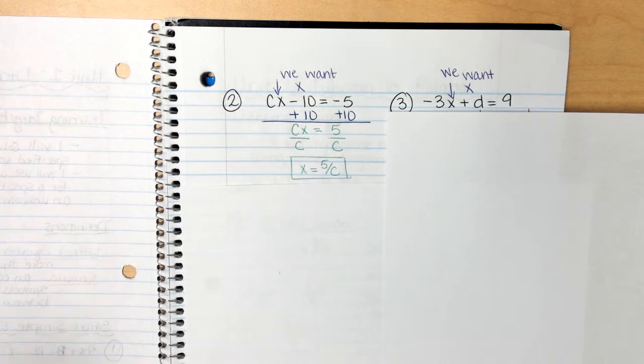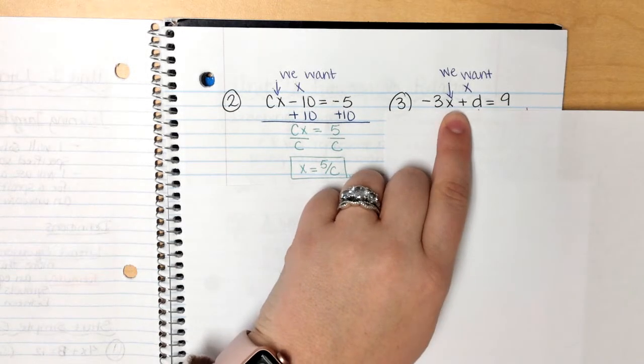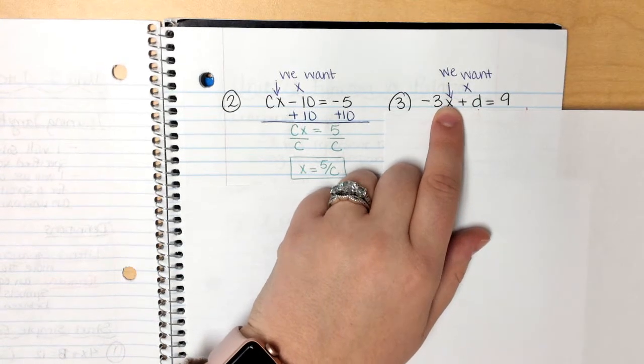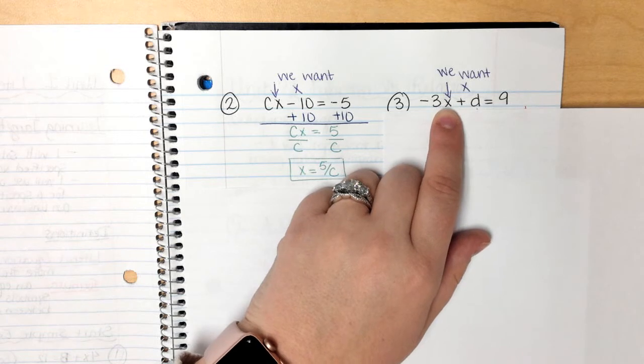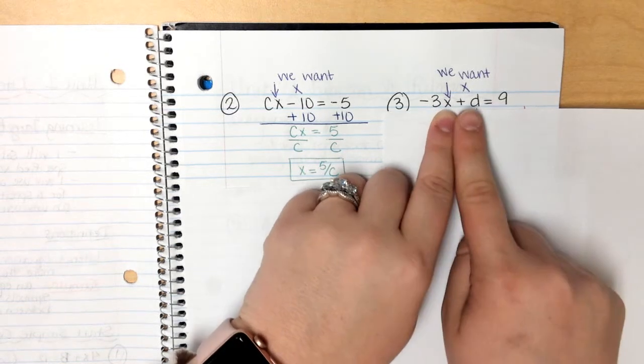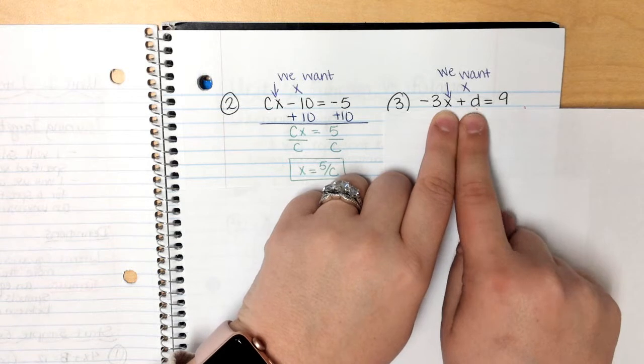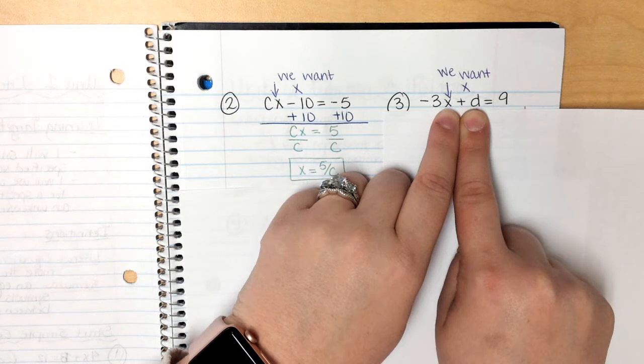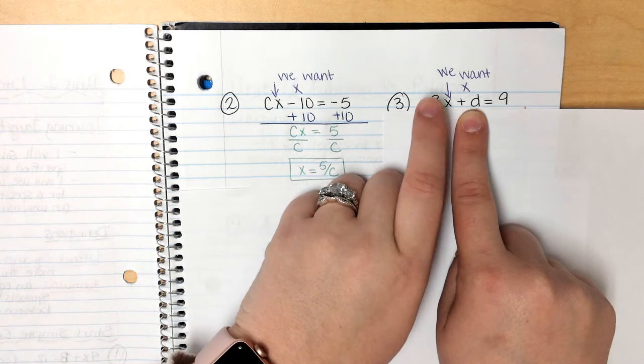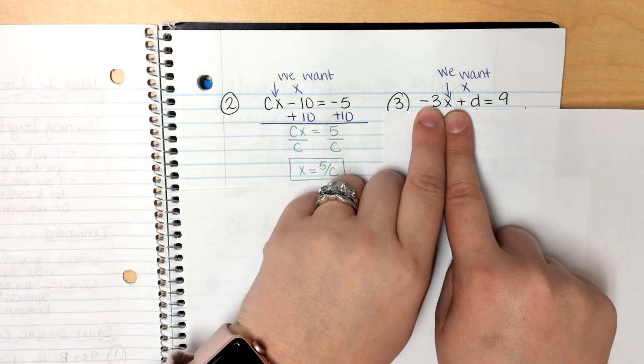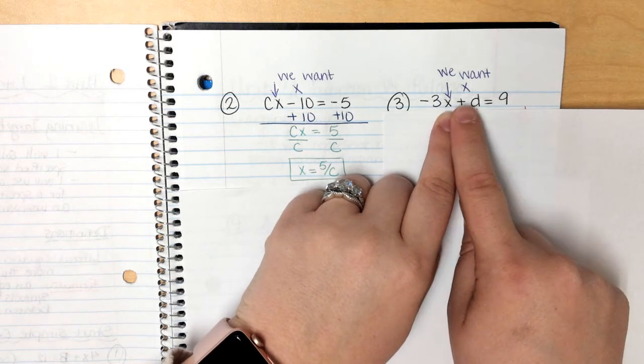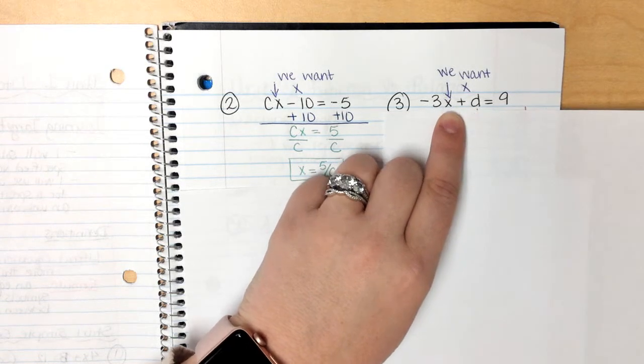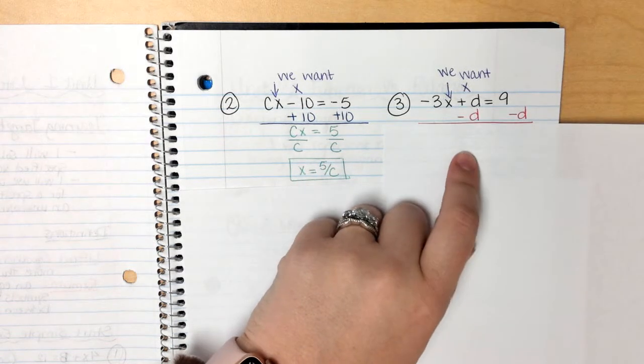One way that I like to explain it is that this is you, and then everybody else is friends. This is you. You want to be by yourself. You are not feeling good. You're just wanting some space. The first person that you're always going to want to get rid of is the annoying friend. The annoying friend is always the guy that's plus you or minus you. This guy, however, is your best friend. You guys are stuck to the hip all the time. You're never apart. But you need some space. So the first person that you're going to get rid of is your annoying friend. So since he's a positive d, you're going to subtract d from both sides.